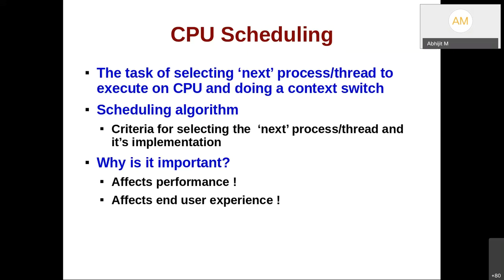Scheduling affects end user experience and most importantly it involves money. If there is a system shared by many users who want their applications to have certain performance, they may be paying for it. Today when we talk of virtualization — platform as a service, applications as a service — you may have a 40-core system running different virtual machines. If those VMs are given to you as a service, performance depends on scheduling in the hypervisor. People often end up paying for the CPU performance they get on a shared system, so it is very important that scheduling algorithms work properly.